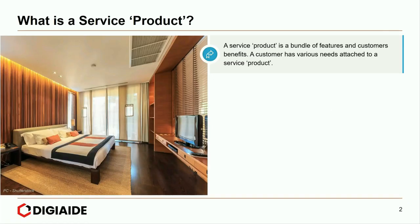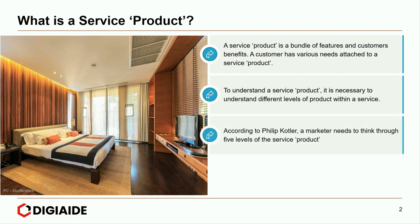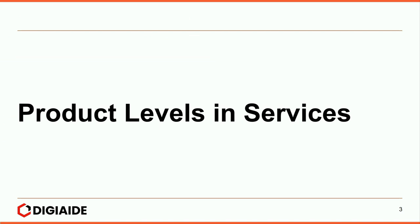A service product is a bundle of features and customer benefits. A customer has various needs attached to a service product. To understand a service product, it is necessary to understand different levels of product within a service. According to Philip Kotler, a marketer needs to think through five levels of service product. The five levels of product constitute a customer value hierarchy. Let's take a quick stab at product levels and services.